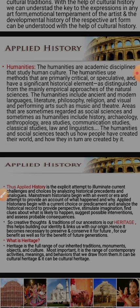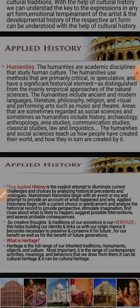Humanities is nothing but the study and subject of social science. Like history is the study of the past, humanities are academic disciplines that study human culture. The humanities use methods that are primarily critical or speculative, and have a significant historical element, as distinguished from the mainly empirical approaches of the natural sciences. The humanities include ancient and modern languages, literature, philosophy, religion, and visual and performing arts such as music and theater.